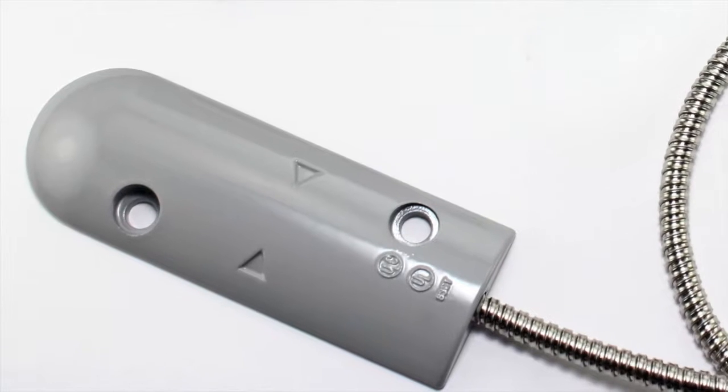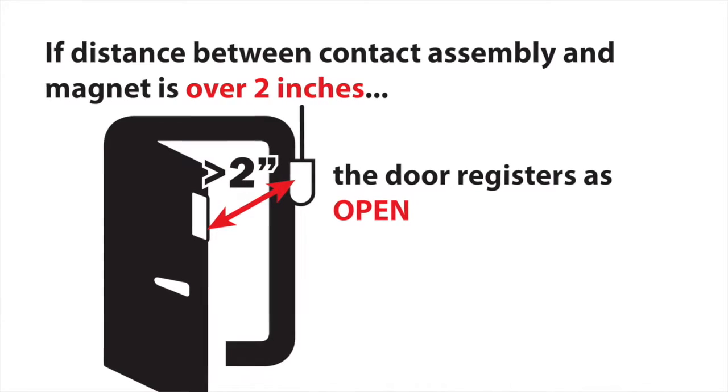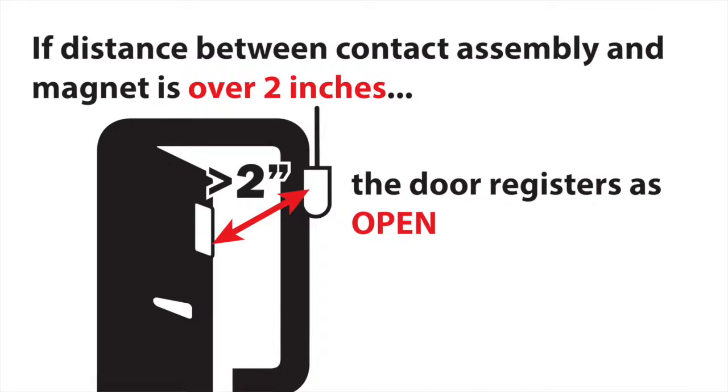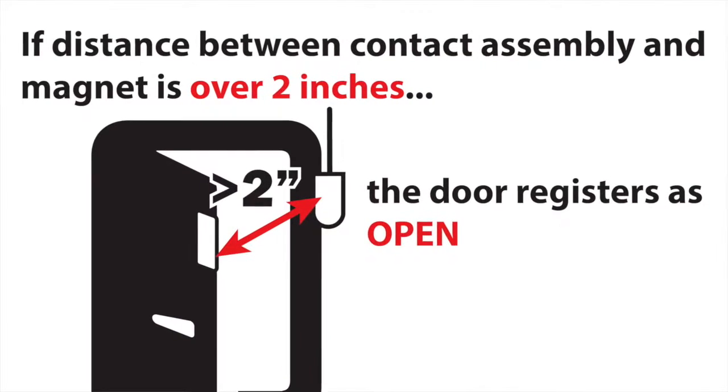The next step is to install the contact assembly. The contact assembly must be within two inches of the magnet, or the door switch will signal that the door is open and trigger an alarm.